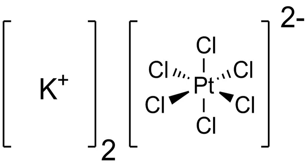Potassium hexachloroplatinate is the inorganic compound with the formula K2PtCl6. It is a yellow solid that is an example of a comparatively insoluble potassium salt. The salt features the hexachloroplatinate anion, which has octahedral coordination geometry.